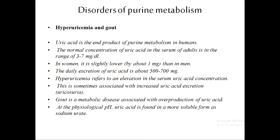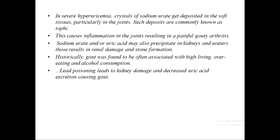Gout is due to the overproduction of uric acid, which forms sodium urate crystals. In severe hyperuricemia, these sodium urate crystals deposit in the soft tissues and joints, causing inflammation and painful gouty arthritis. Sodium urate can also precipitate in the kidney, resulting in renal damage and stone formation.